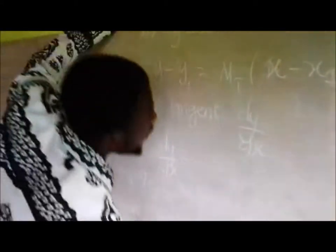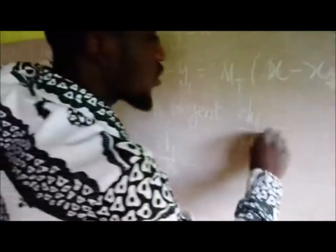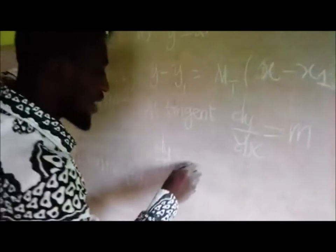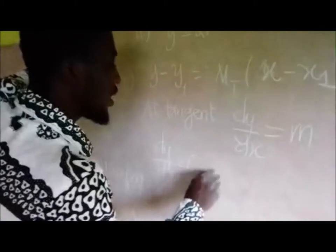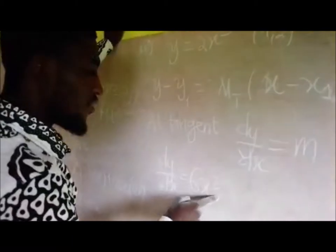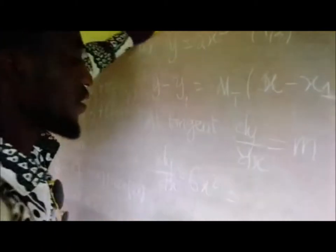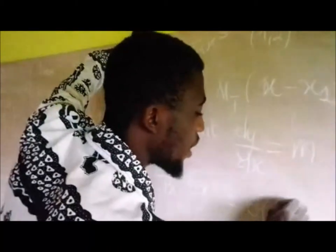dy/dx is not 0, sorry. At the tangent, we have dy/dx which equals to m. So I am going to have here dy/dx given by 6x squared. And to find the tangent, we just need to replace the value of x here. We want to have here 6 into 1 squared, which gives us 6.